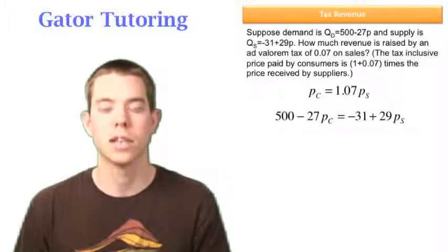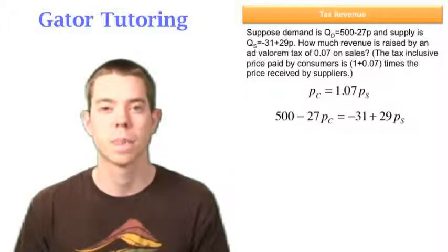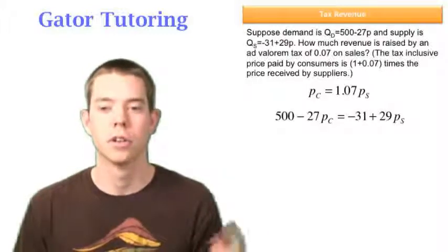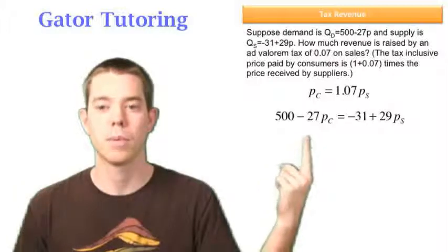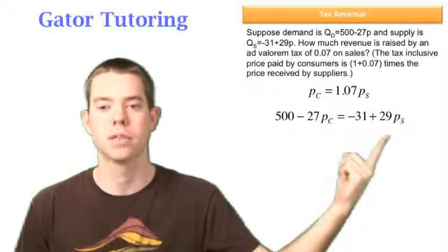So we know that we're going to set demand equal to supply to solve. That's how we always solve. But we know that we can plug in PC for 1.07 PS. Now, notice that the demand is on the left side here. So this left side, that's the consumer side, which is why we have PC there. Supply is on the right side, which is why we have PS over there.